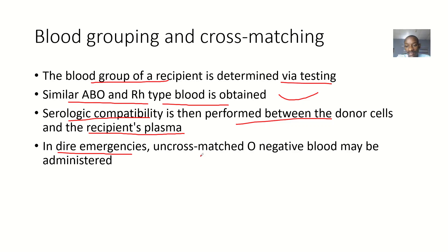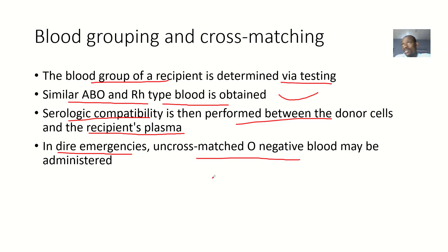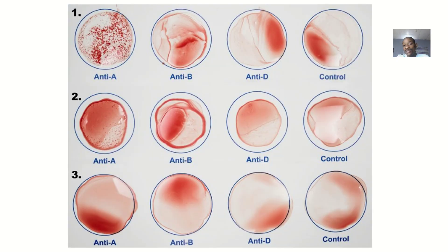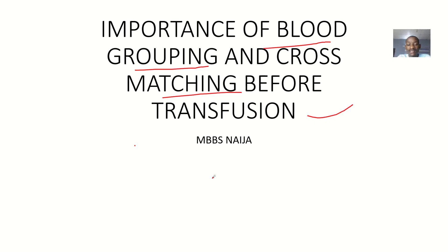In emergencies, uncrossmatched blood group O-negative may be administered. So, if it is too urgent that you cannot do testing on the patient or on the donor blood, just go to the blood bank and find O-negative type of blood and administer it. Those are the importance of blood grouping and cross-matching before transfusion.